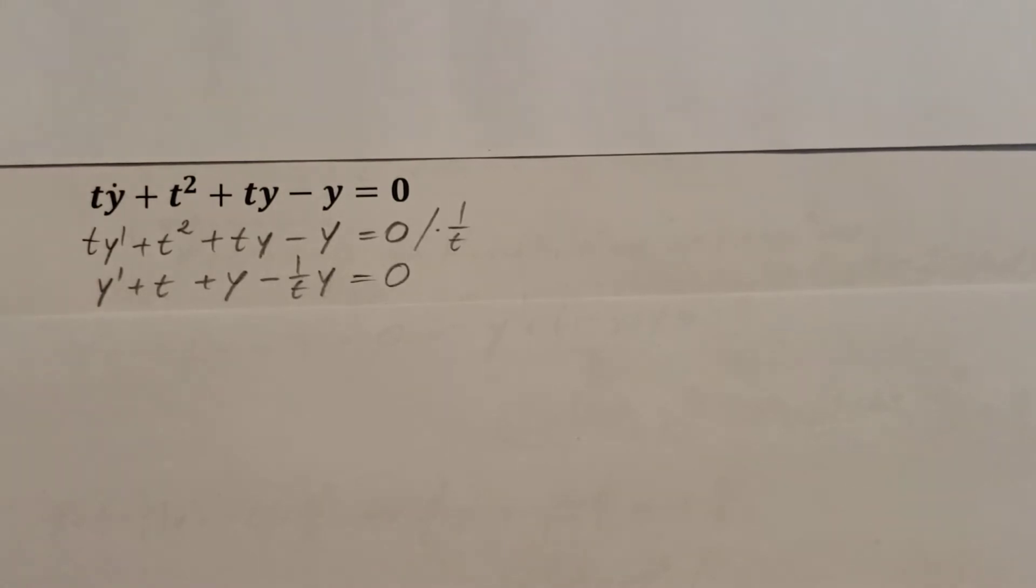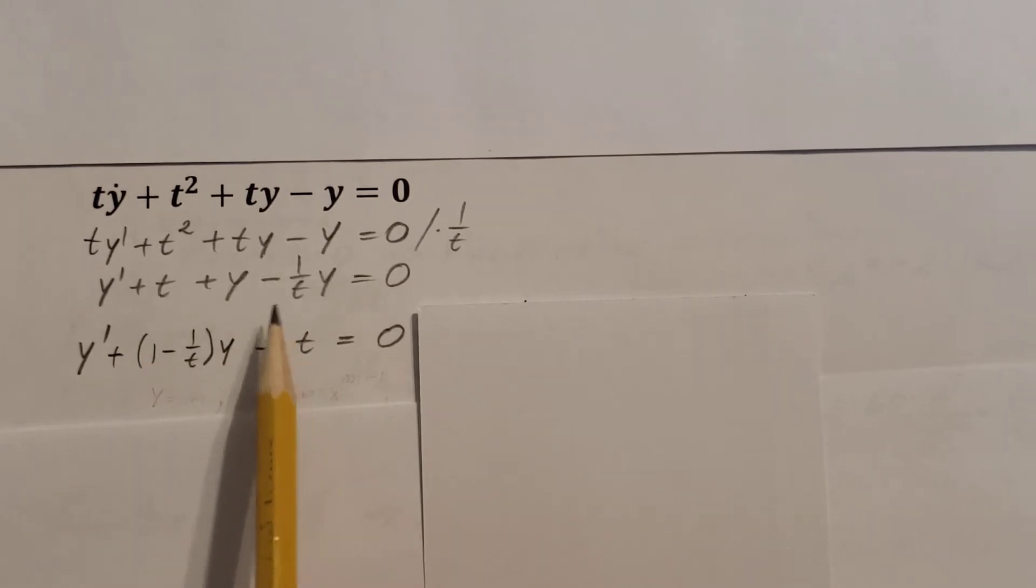Next step, there's this y here and there's another y here. Well, let's factor out the y and combine them together. There it is, one minus one over t times y, these two together.